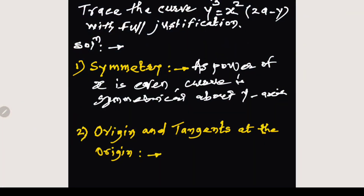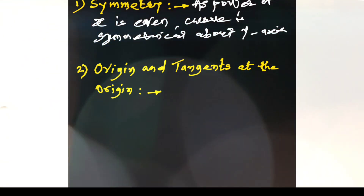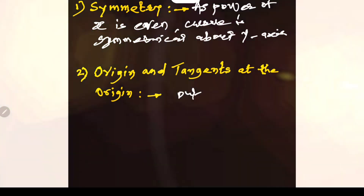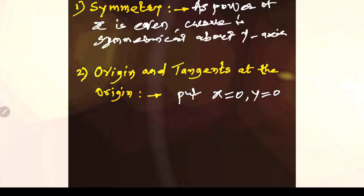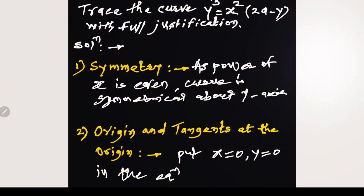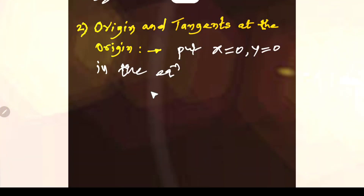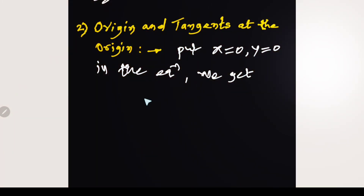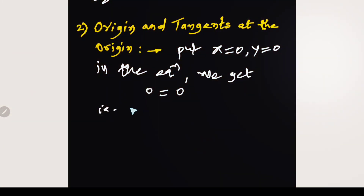And no any other symmetry. Second point: origin and tangent at the origin. To check this point, we have to put x = 0 and y = 0 in the equation. The left-hand side becomes 0 and right-hand side becomes 0, meaning we get 0 = 0. That is, the curve passes through the origin.